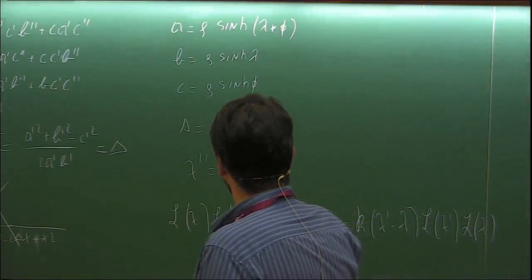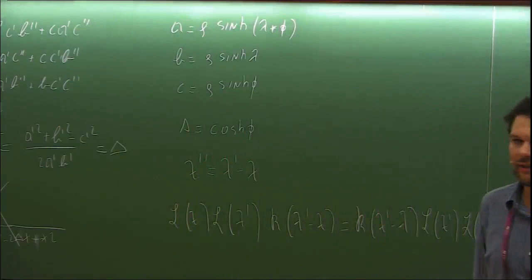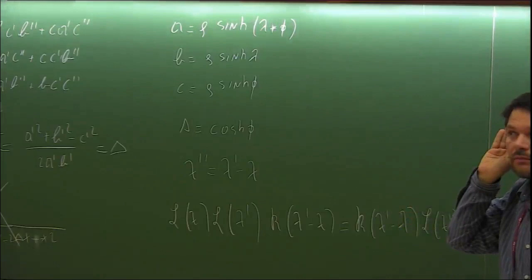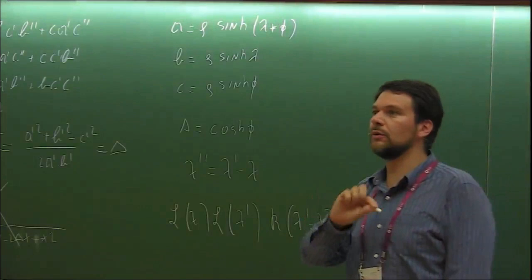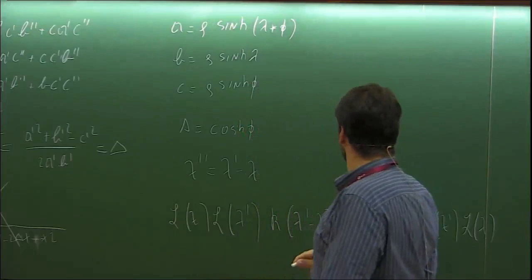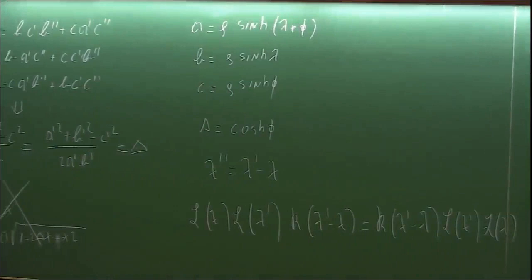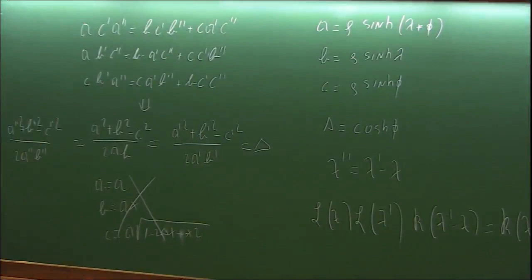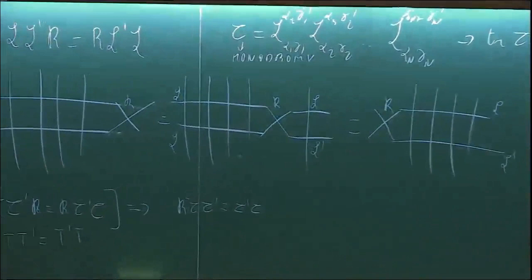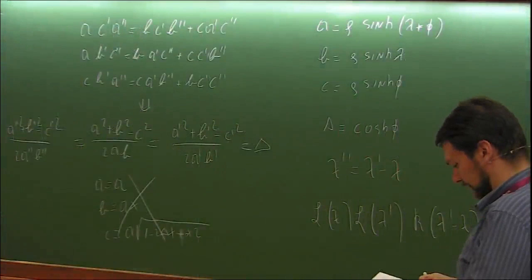This equation is a version of the Yang-Baxter equation — not the true Yang-Baxter, because these two operators act on different spaces: the R matrix acts purely on the horizontal degrees of freedom, while the L matrix acts on both the horizontal and the vertical degrees of freedom.